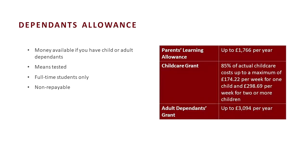There is a dependents allowance — money available if you've got child or adult dependents. It's means tested, so they look at your household income, and it's for full-time students only. It's not repayable, so it's in the form of a grant. There's money available for parents learning allowances, childcare grants and adult dependence grants as well.